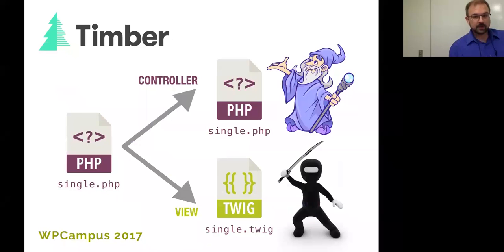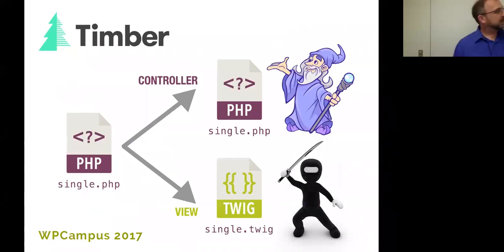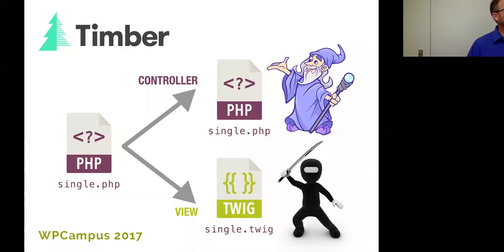Timber is designed to solve this problem by splitting what would normally be a single template file into two files that I'm calling the controller file and the view file, named loosely after the model-view-controller paradigm of programming. The controller file is where all of your PHP and WordPress API information lives — all of your functions. And then the view file is where your HTML is going to live in a format that people who understand HTML can actually read.